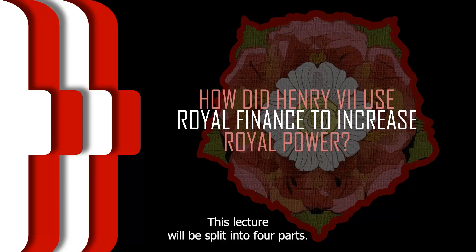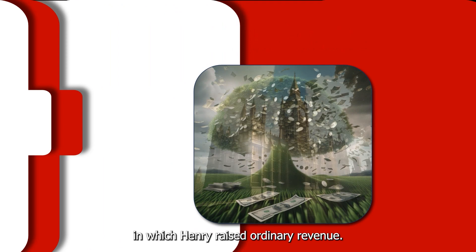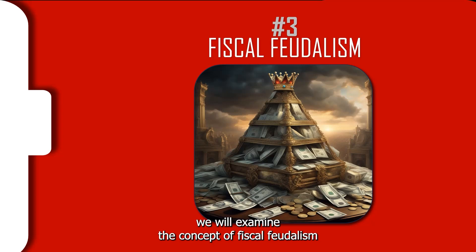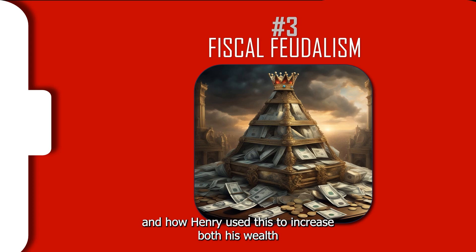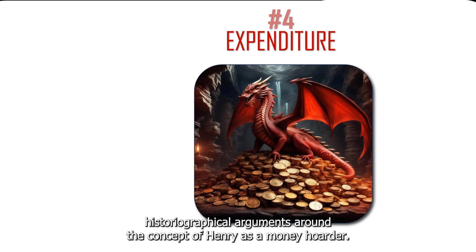This lecture will be split into four parts. We will first examine the ways in which Henry raised ordinary revenue, then move on to examine how he raised extraordinary revenue. After this we will examine the concept of fiscal feudalism and how Henry used this to increase both his wealth and power. Finally, we will examine Henry's expenditure and the different historiographical arguments around the concept of Henry as a money hoarder.